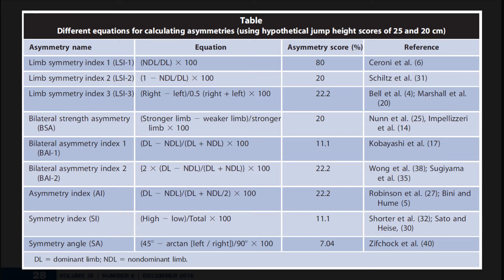If you think about it practically: if you had three primary research studies, and one chose to report asymmetries in a single-leg countermovement jump using limb symmetry index 3, one chose to use the symmetry index, and one chose to use a symmetry angle — they've all quantified interlimb differences via a unilateral jump. But maybe we get asymmetries reported as 15%, 8%, and 5%, because the mathematical equations, regardless of the data going into them, will always produce different outcomes. That's a real problem — there's a major difference between the outcomes from many of these equations, and no real consistency in which ones we should use.